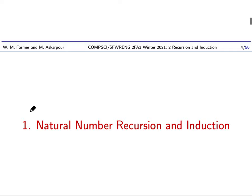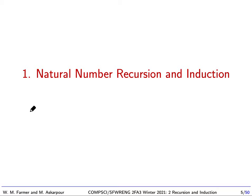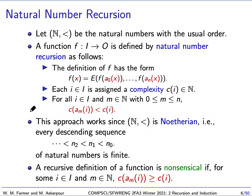Let's start with natural number recursion. We have the mathematical structure of the natural numbers with a strict order — the usual order: 0 is less than 1, 1 is less than 2, and so forth. We may want to define a function by natural number recursion. This function takes some inputs and gives some outputs. These inputs and outputs may have nothing to do with natural numbers, but we're going to define the function using natural number recursion.